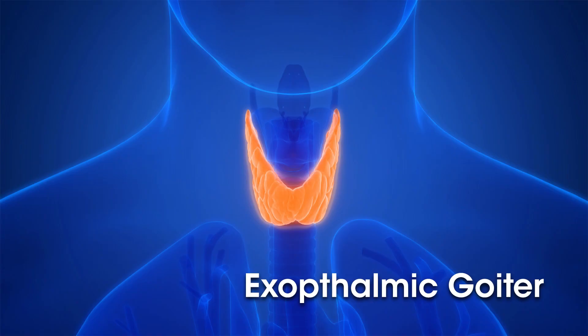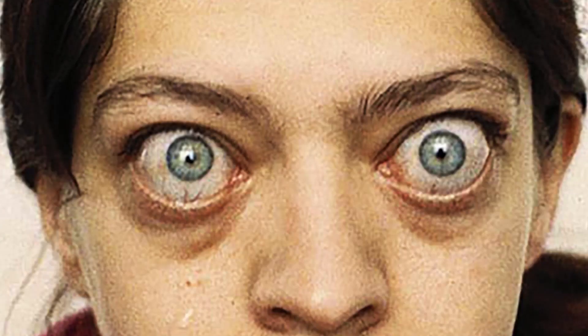Diagnosis of hyperthyroidism, like hypothyroidism, involves blood tests for T3, T4, and TSH — elevated T3/T4 with low TSH confirms the condition. An associated condition in Graves' disease is exophthalmic goiter, where the eyeballs protrude outward with a staring look, caused by adipose tissue deposition in the retrobulbar area behind the eyeball pushing it forward.